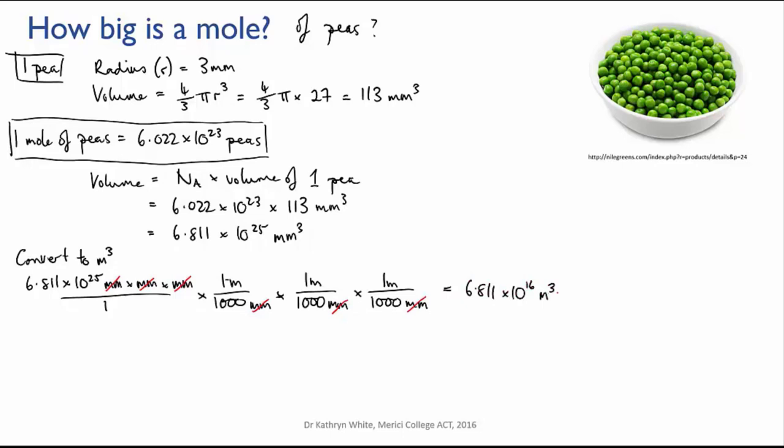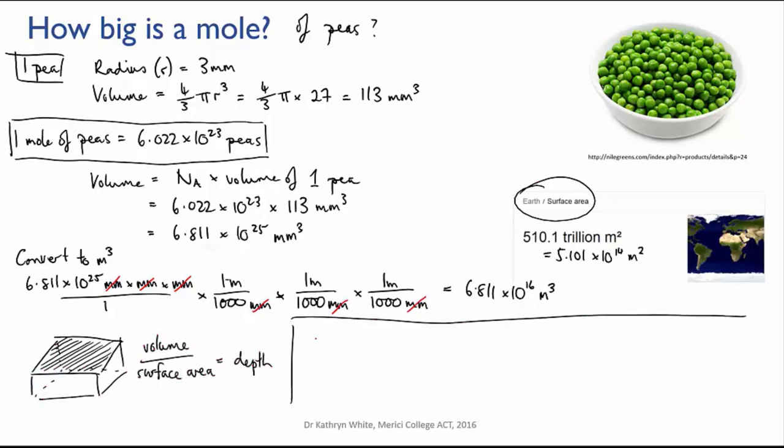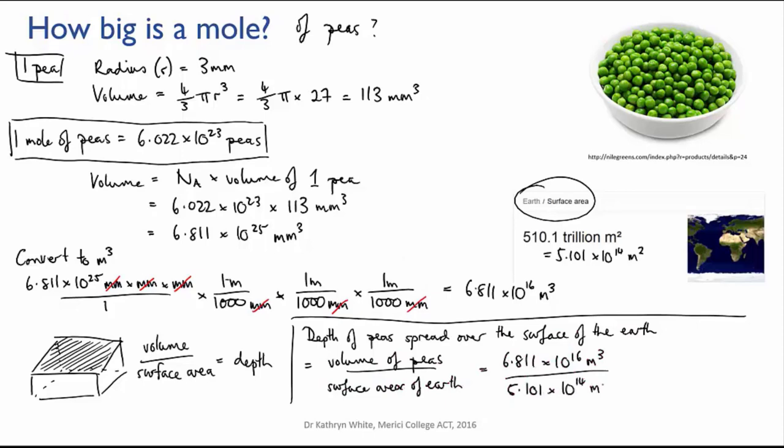Well, that seems like quite a lot, but I still can't really imagine it. So the surface area of the Earth is 5.1 times 10 to the 14 meters squared. So if I divide the volume of peas by the surface area of the Earth, that'd be like spreading that whole volume of peas evenly over the surface of the Earth. How thick would that layer be? So we can calculate that by dividing the volume of the peas by the surface area of the Earth, and that gives me 134 meters.